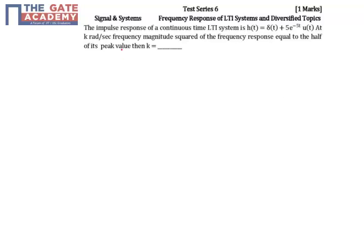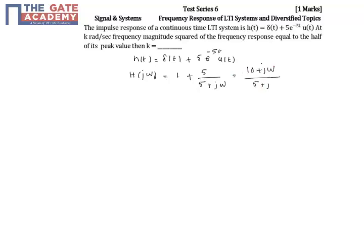First, I will find the frequency response of the given system. The impulse response h(t) is given as a delta of t plus 5 times e to the power minus 5t times u(t). So the frequency response H(jω) is equal to 1 plus 5 divided by (5 + jω), which simplifies to (10 + jω) divided by (5 + jω).